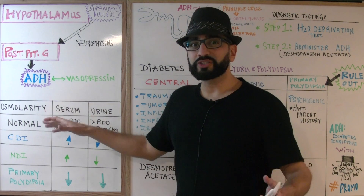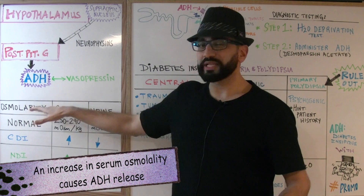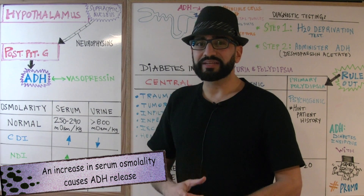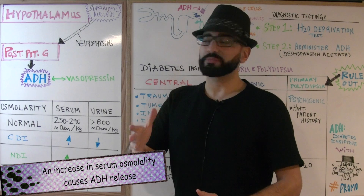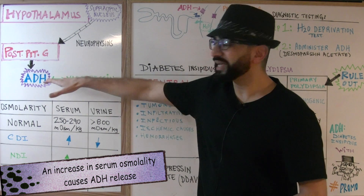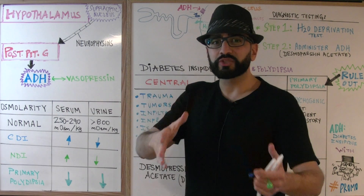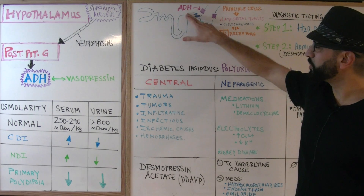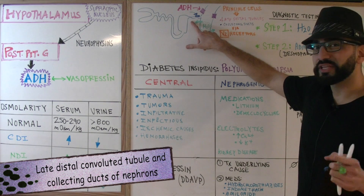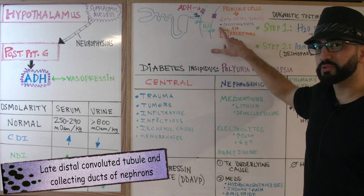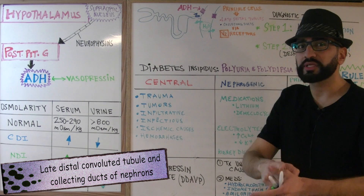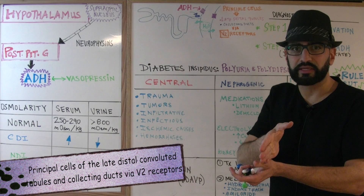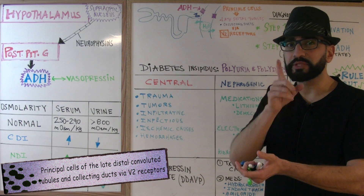ADH responds to changes in serum osmolality levels. When serum osmolality levels get too high, the posterior pituitary gland is going to release antidiuretic hormone. ADH works on the late distal convoluted tubule as well as the collecting tubules. What you want to remember is that it works specifically on the principal cells — don't forget the principal cells.